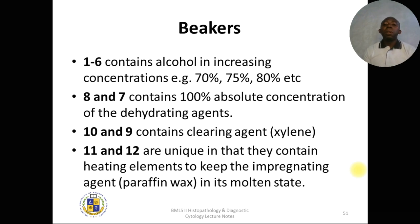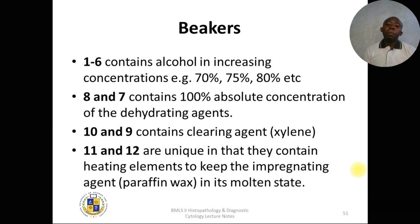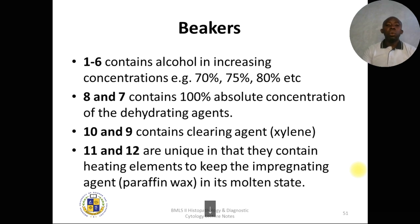Beakers 9 and 10 contain xylene for clearing — removing the dehydrant from the tissue. Beakers 11 and 12 are unique: they contain the heating element for impregnation, keeping the molten wax at a temperature above its melting point so the wax can penetrate the tissue well.